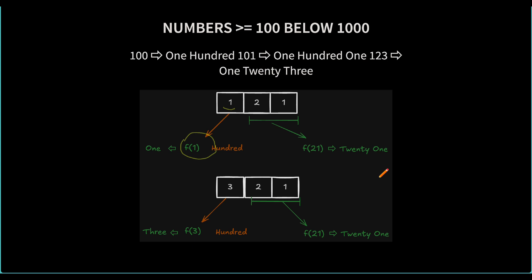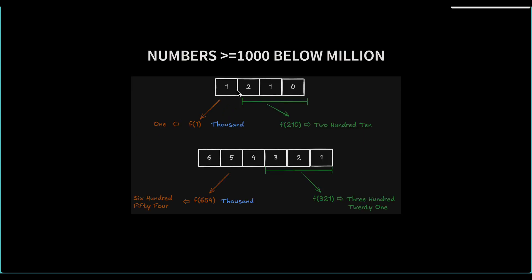For numbers from one thousand up to below one million, we divide by 1000. For example, 1210 divided by 1000 gives 1, so we get 'One Thousand', and 1210 modulo 1000 gives 210, which the recursive function returns as 'Two Hundred Ten'. For 654321, dividing by 1000 gives 654 ('Six Hundred Fifty Four'), concatenate 'Thousand', and modulo 1000 gives 321 ('Three Hundred Twenty One').